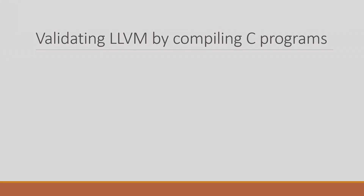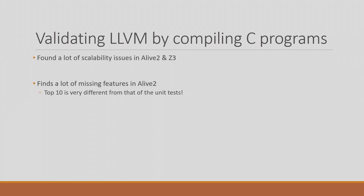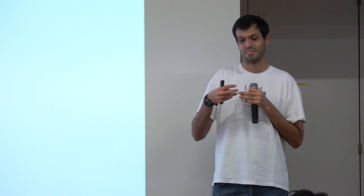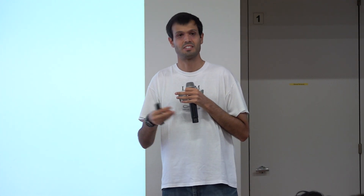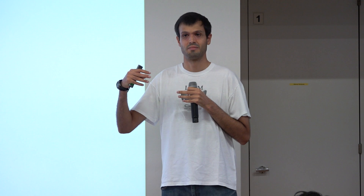After running over unit tests, we started compiling larger programs and found a lot of scalability issues — both in our tools and in Z3 — because you start having SMT formulas that are like 100 gigabytes. Interestingly, we have scripts showing the top 10 features we don't support, and this is very different from what we find in unit tests. Different people implementing optimizations write more tests for those areas, so the missing features in unit tests aren't necessarily representative of what real programs look like.